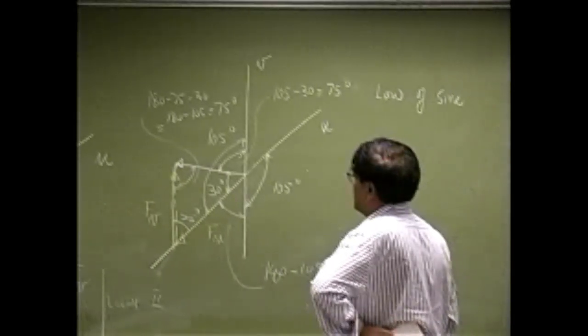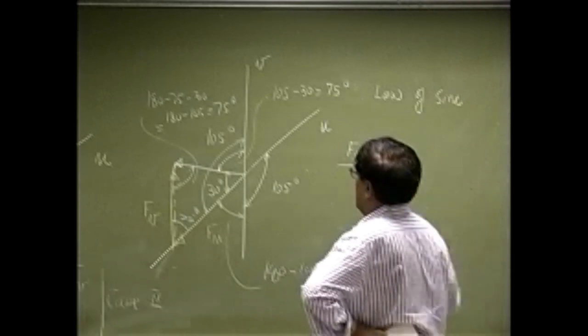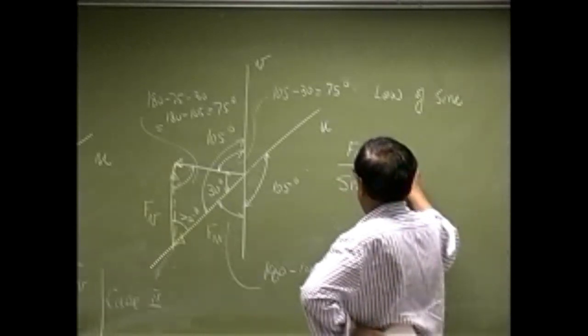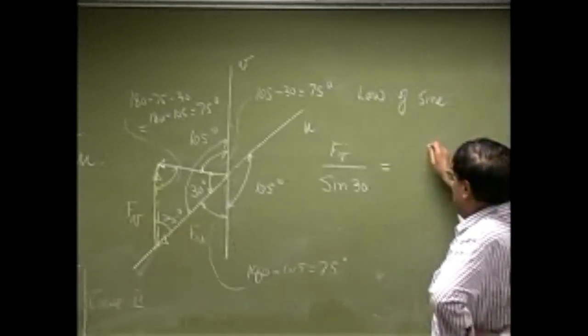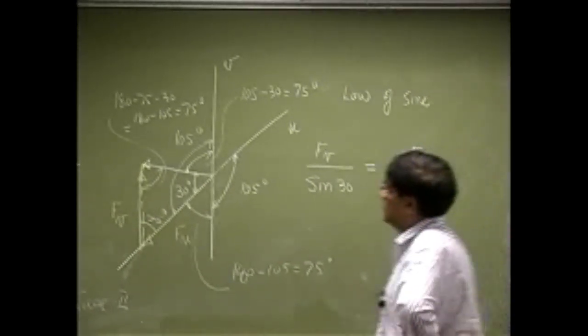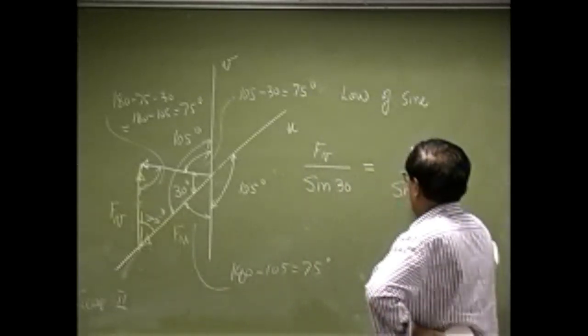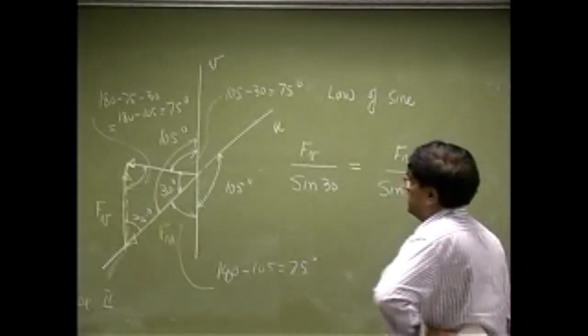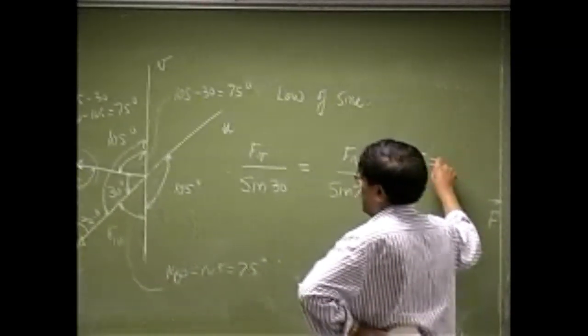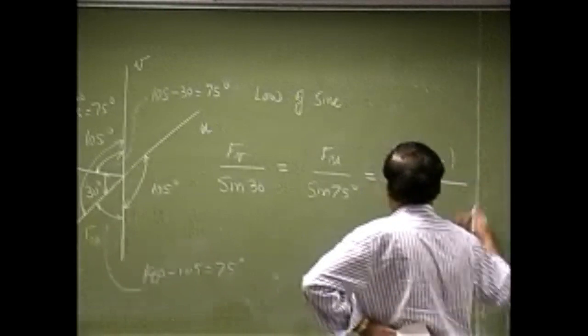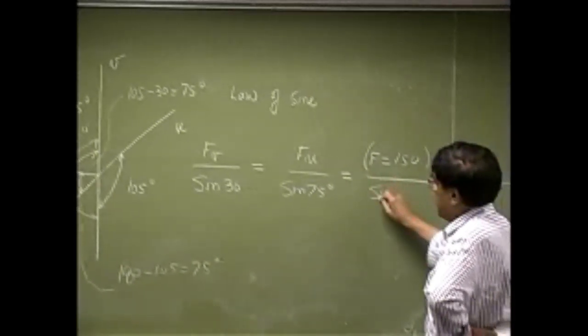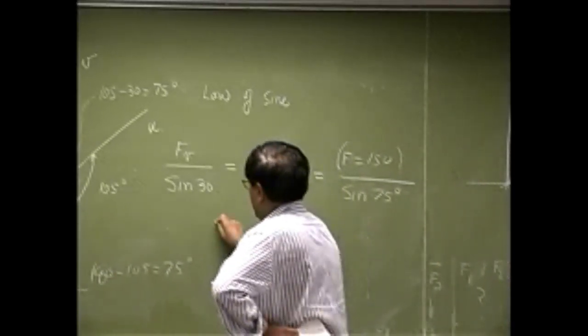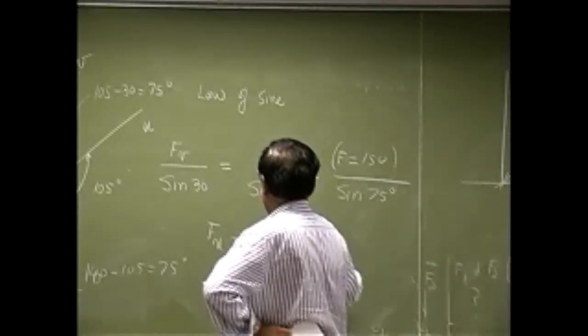Once you have the angles, things get easier. I could say F of its magnitude divided by the sine of 30 degrees, that's the angle opposite the triangle, equals F_u divided by sine of 75. Then the force itself is 150, and you divide by sine of another 75. So we get F_u as 150 N.